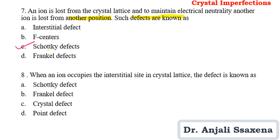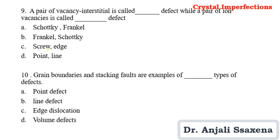Question 8: When an ion occupies an interstitial site in the crystal lattice, the defect is known as — that is Frenkel defect, as Frenkel defect is an example of interstitial defect. Question 9: A pair of vacancy and interstitial is called Frenkel defect, while a pair of ion vacancies is called Schottky defect. So the answer is option B — Frenkel defect first, then Schottky defect.